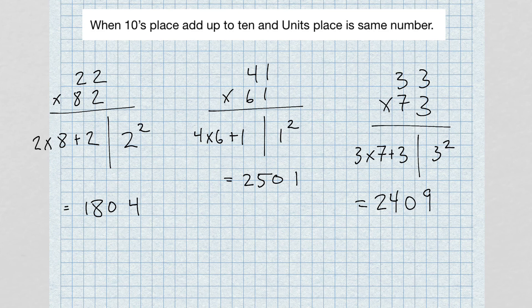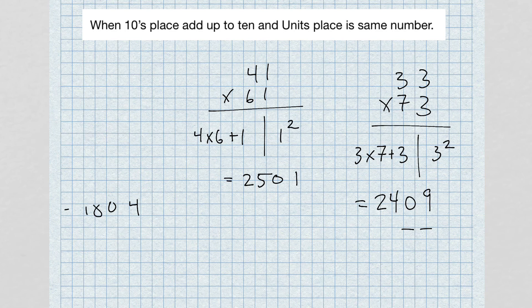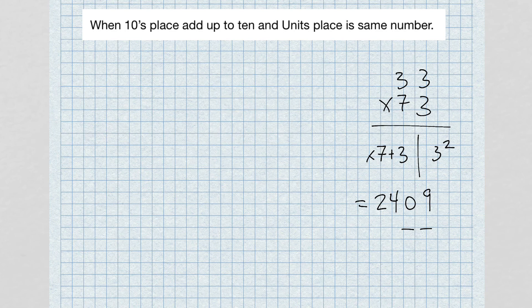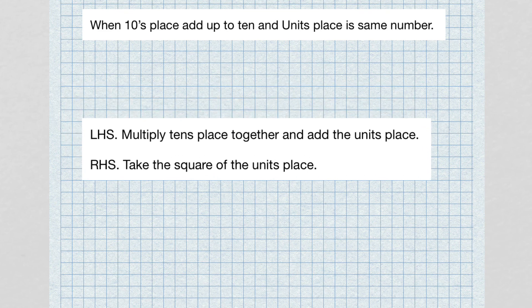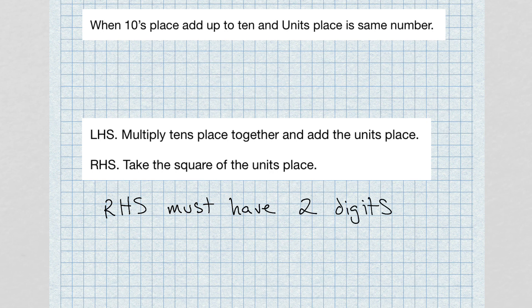Very simple trick to use for these special cases: when the tens digits add up to 10 and the units digit is the same number. For the left-hand side, multiply the tens digits together and add the units digit. For the right-hand side, square the units digit. Remember, the right-hand side must always have two digits in the answer.